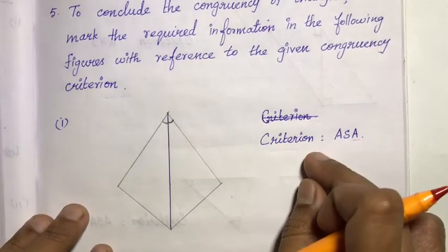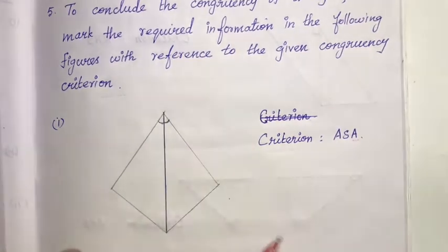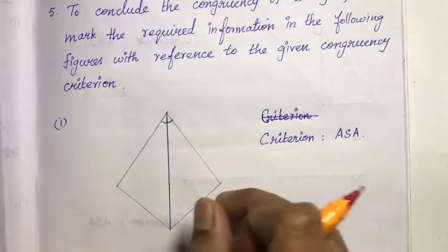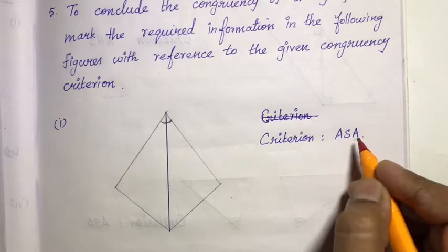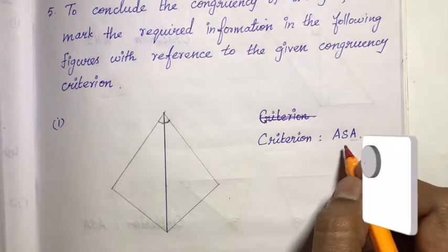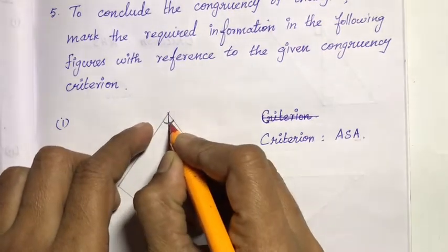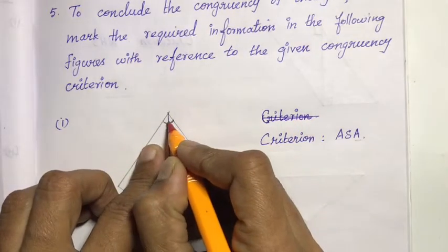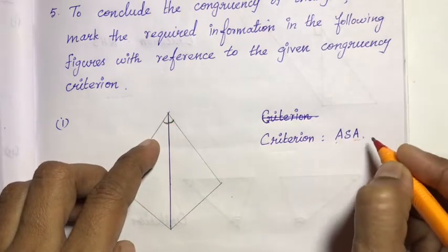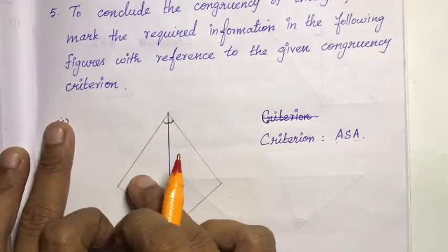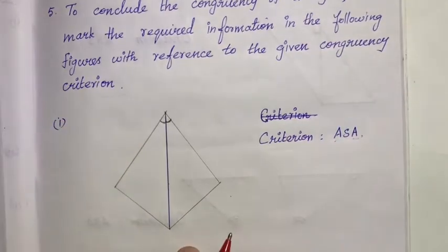First figure is given. The criteria here is Angle-Side-Angle (ASA). So we need to mark the required information. For ASA, we need 2 angles and the included side. Looking at the figure, we can identify which angles are equal. This angle in this triangle and this angle in that triangle are the same.